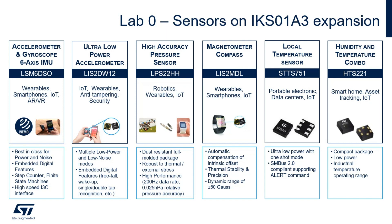Third, an ambient pressure sensor, LPS22HH. Its accuracy is so high that it can sense variations in altitude of only 5 cm, that is a couple of inches.